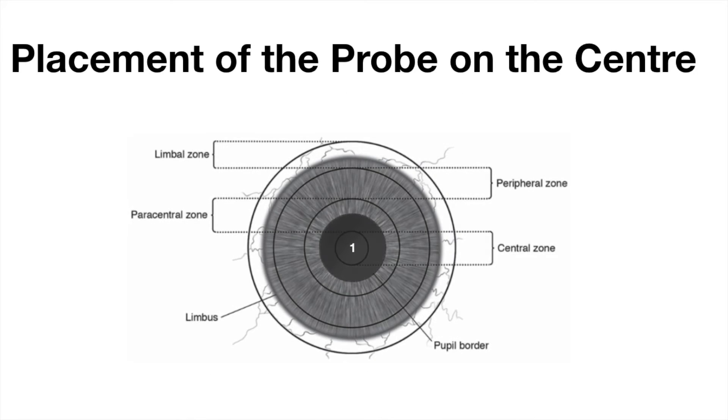Placement of the probe on position 1 is the correct position, whereas positions 2, 3, 4, and 5 are wrong positions.